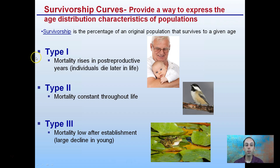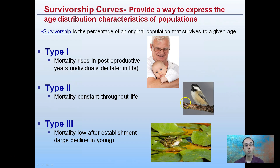Type 1 is where mortality rises in post-reproductive years — individuals die later in life — and that would be the example of humans. Type 2 survivorship curves have mortality that is consistent throughout life, which is consistent with many bird species.